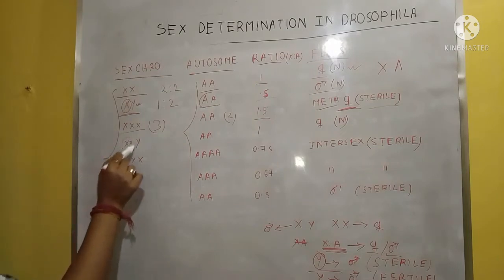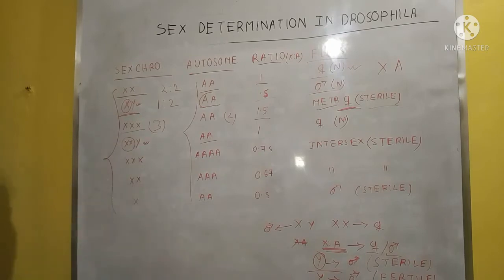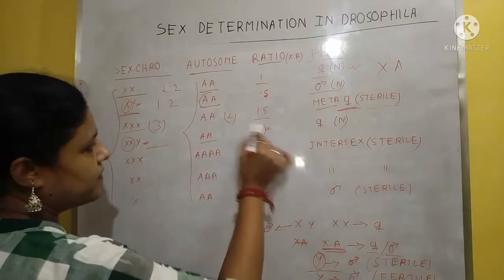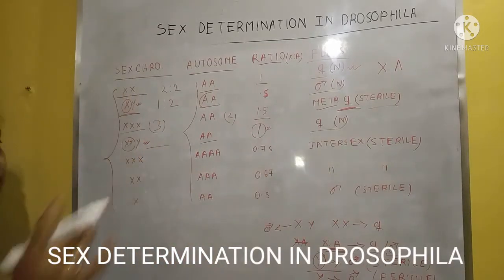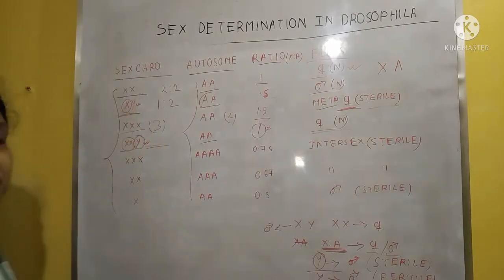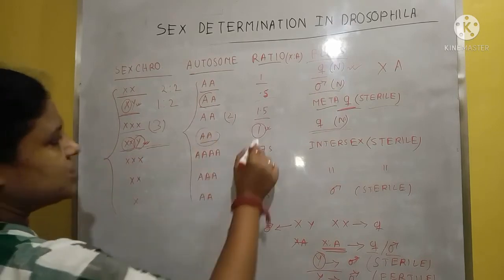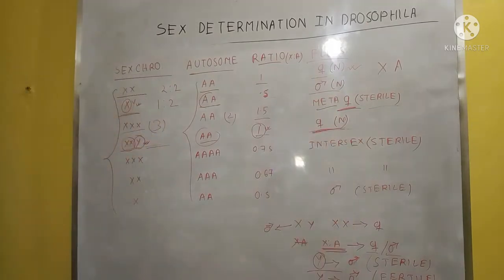When there are 2 X chromosomes and 2 autosomes and the Y gene is present, the Y gene is present but not important here — only the X to A ratio matters. When the ratio of X to A is 1, it always shows a normal female. Even with the Y gene present, it does not show male; the Y gene only indicates sterility or fertility.